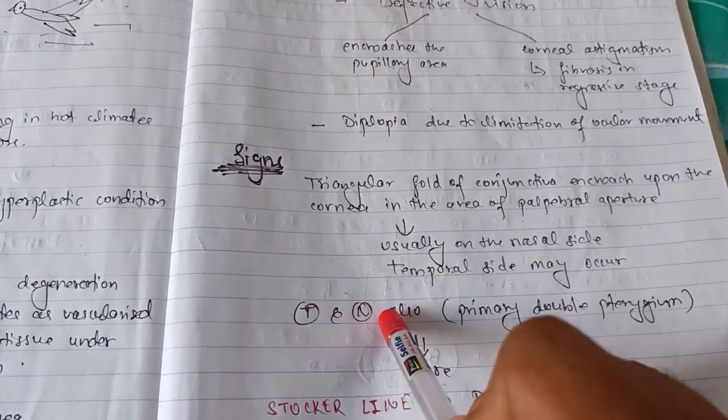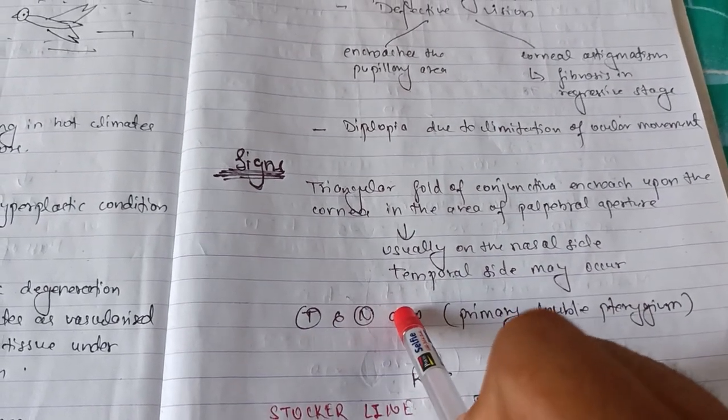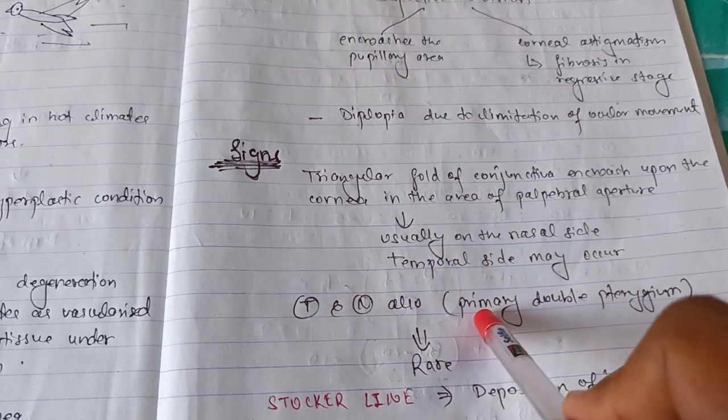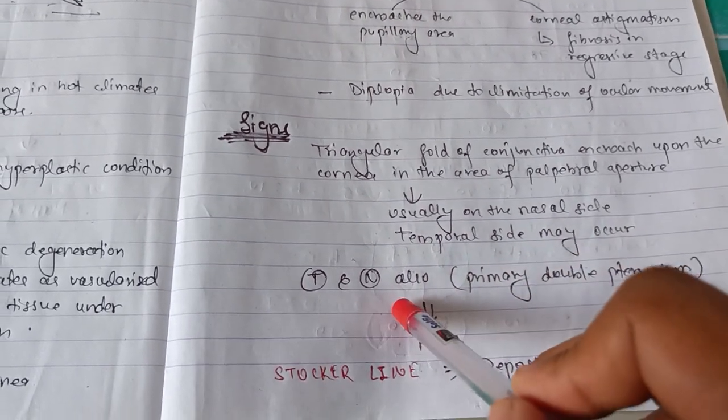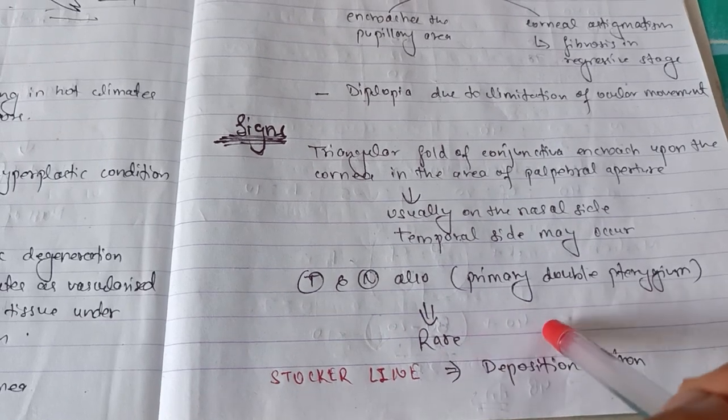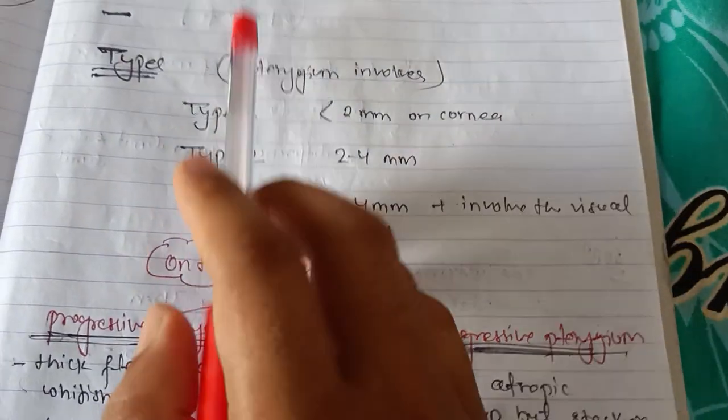Talking about signs, there is a triangular fold of conjunctiva encroached upon the cornea in the area of palpebral fissure, which is usually on the nasal side. Temporal and nasal pterygium can occur together, which is called double pterygium and is very rare. There is Stocker line, which is deposition of iron.